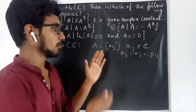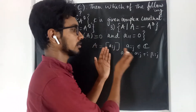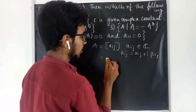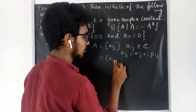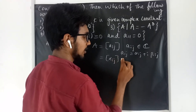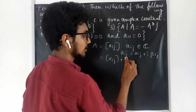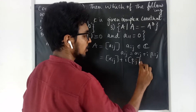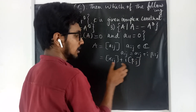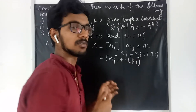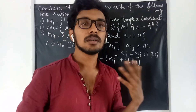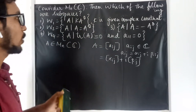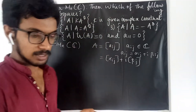Since the entries are complex numbers, you can write each entry in the form of some real number plus some imaginary number. When you segregate these things, you may also write the matrix as alpha_ij plus i times the matrix beta_ij, where both matrices are real matrices.